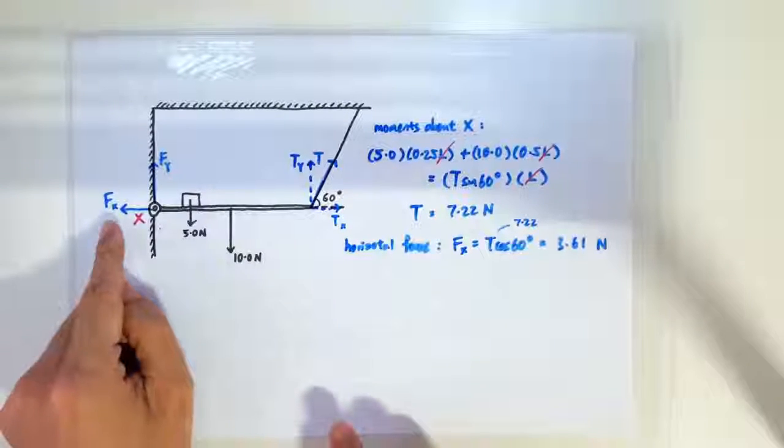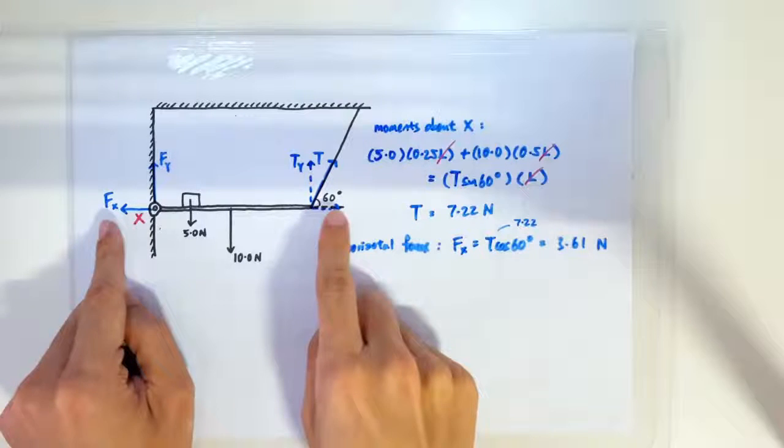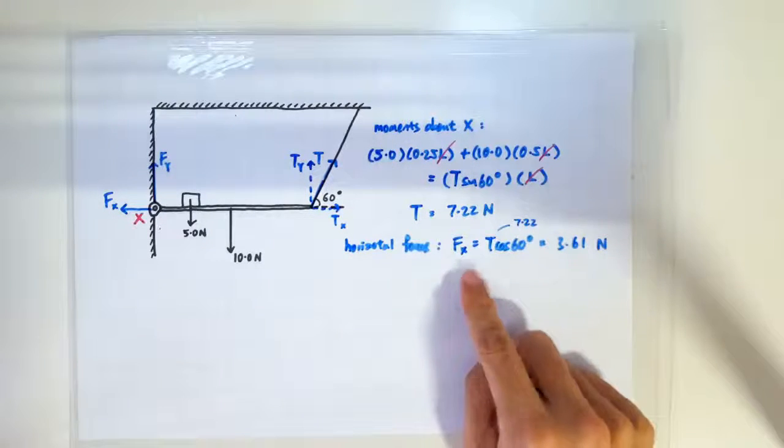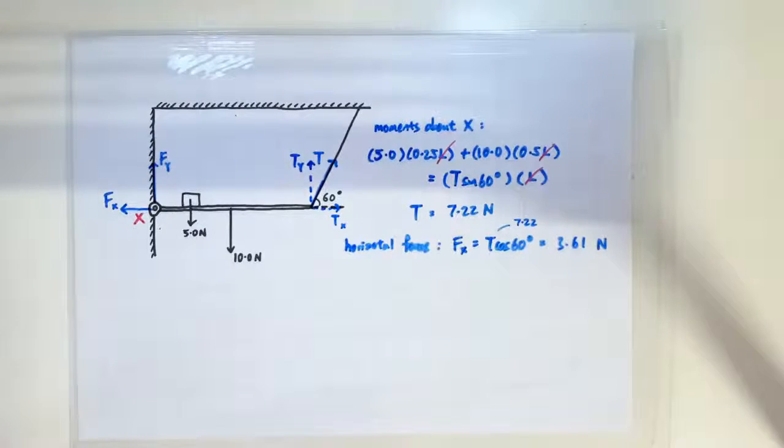Horizontally, we only have Fx and the horizontal component of the tension. So these two must be balanced. So Fx is T cos 60, which turns out to be 3.61 newtons.